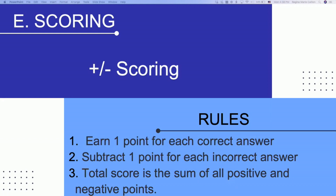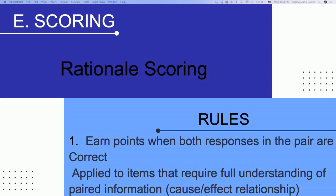The final scoring I want to go over is the rationale scoring. This is when you have to get both item responses correct. This is what you're going to see when you have a cause-and-effect relationship — you have to understand why X causes Y. I'm going to show you some examples of this in a moment.